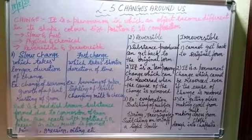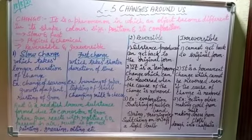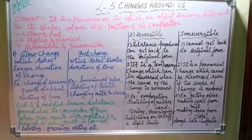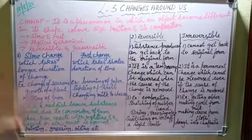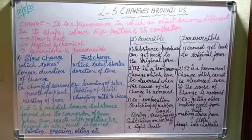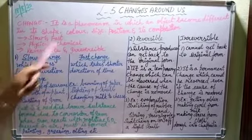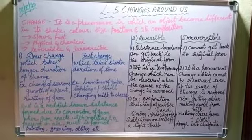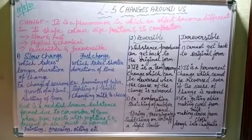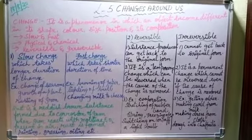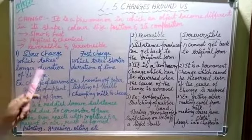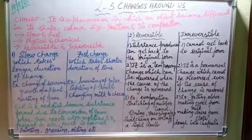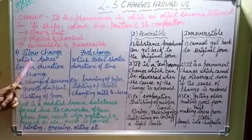In this lesson, we are going to learn about three different types of changes. The first is slow and fast change, the second is physical and chemical change, and the third is reversible and irreversible change. Today's class we will discuss slow and fast change, and reversible and irreversible change.